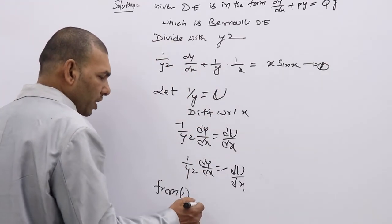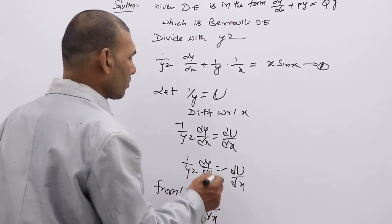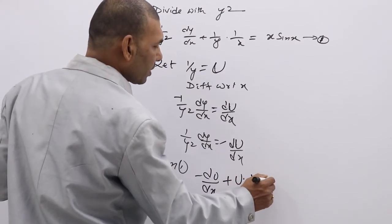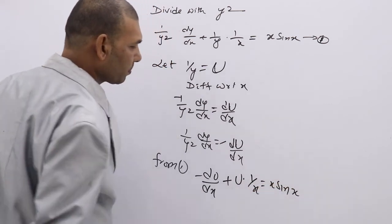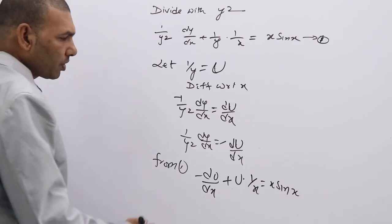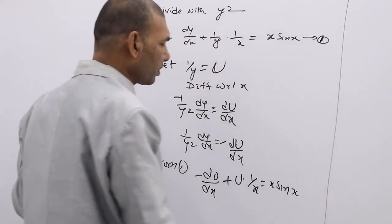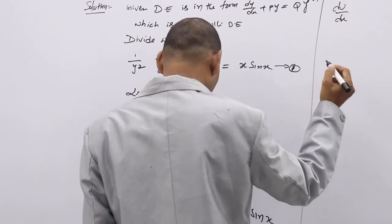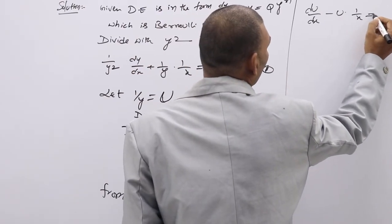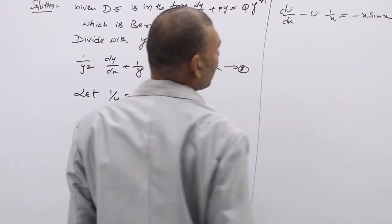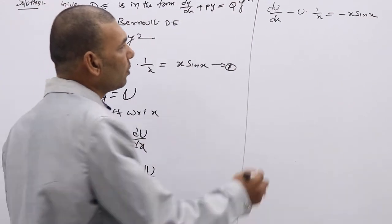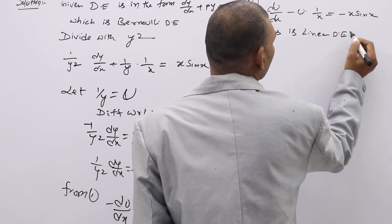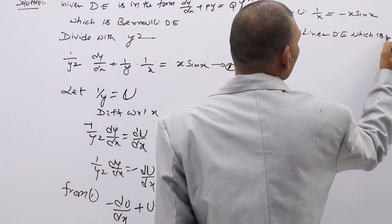Substituting gives: minus du/dx plus u·(1/x) equal to x·sin x. Multiplying by minus 1 to get standard linear form: du/dx minus u·(1/x) equal to minus x·sin x. This is a linear differential equation in the form du/dx plus Pu equal to Q.